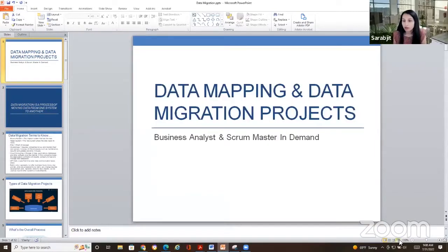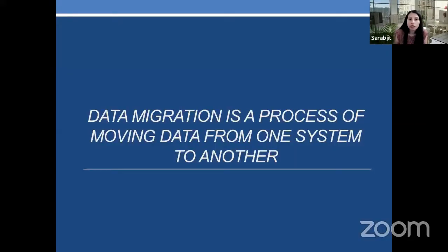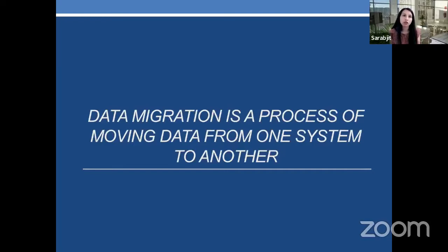So what is data mapping and data migration? Generally, data migration is a process of moving data from one system to another. When we talk about data migration or data mapping, we're essentially making sure that the fields — all systems have a database on the back end. To give you an example, Amazon is something that everybody can relate with. What you see on Amazon is just the products available, but on the back end is a huge database that lists the name of products, the price point, the sellers, and even your data as a consumer.